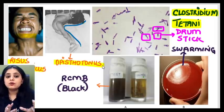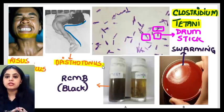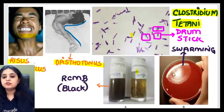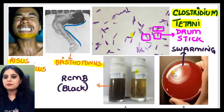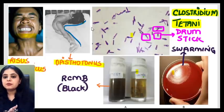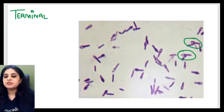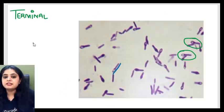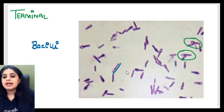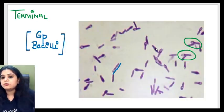Moving on to how the microbiology pictures correlate — we have three pictures. Let's zoom into each one by one. Looking at the first image: first and foremost, are they cocci or bacilli? They are elongated, so they are bacilli, and they are blue-violet in color, so they are Gram-positive bacilli.